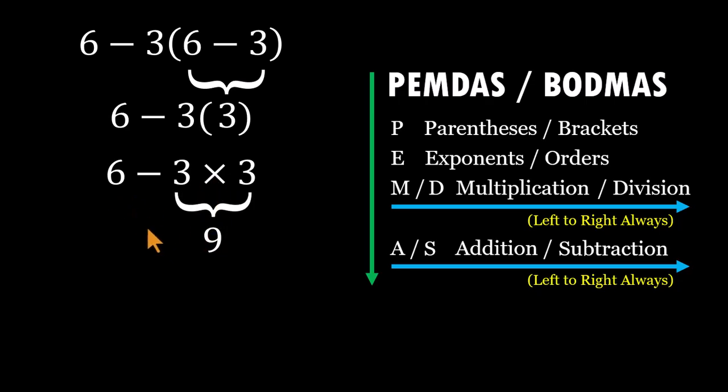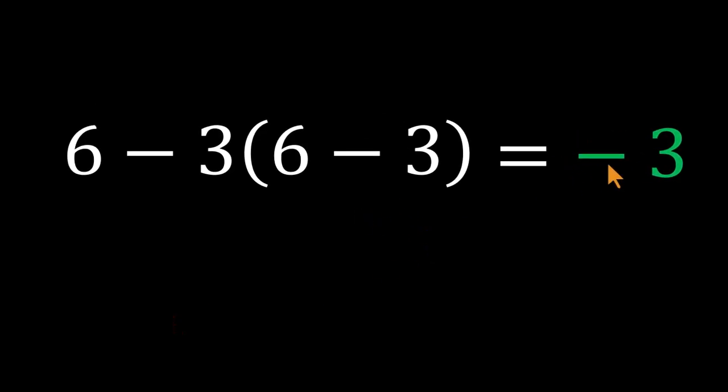Now bring the six down. We are left with six minus nine, which equals negative three. That's the correct answer. Negative three, not nine.